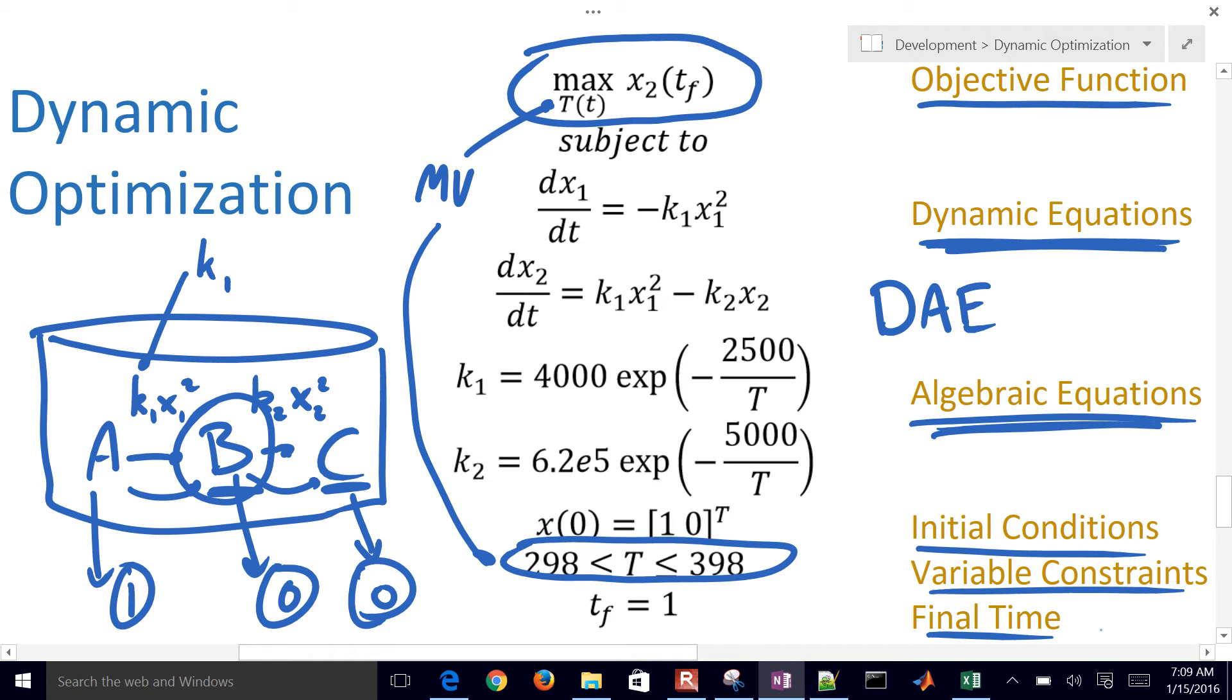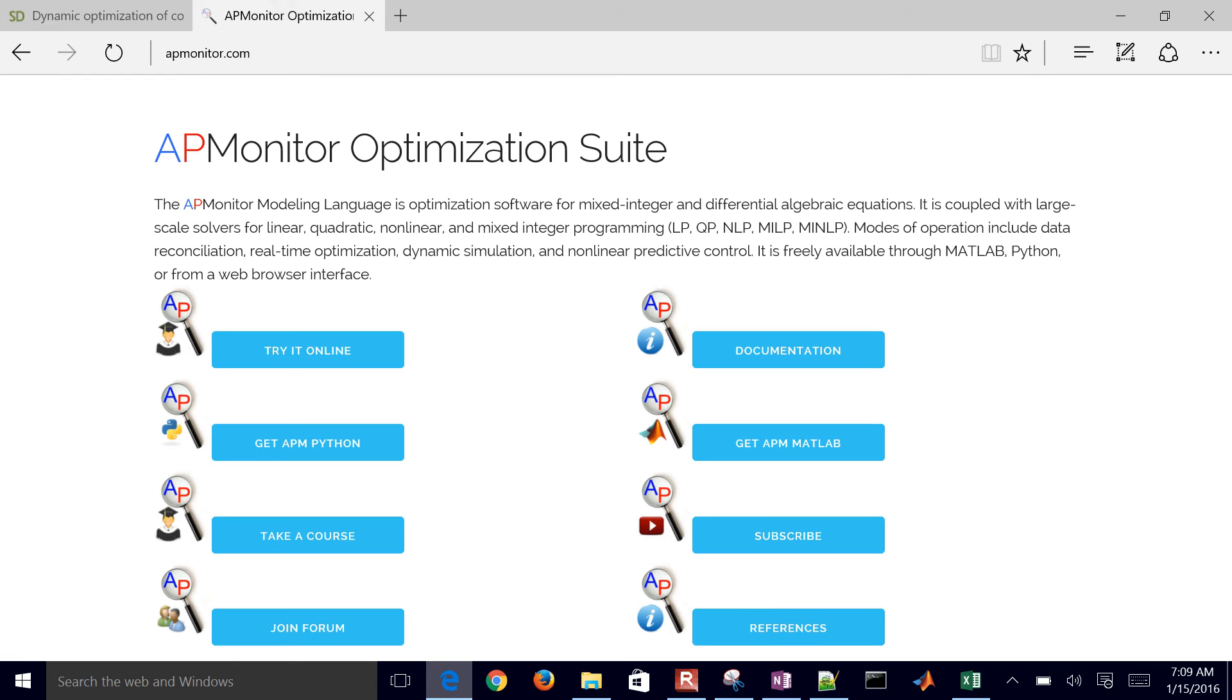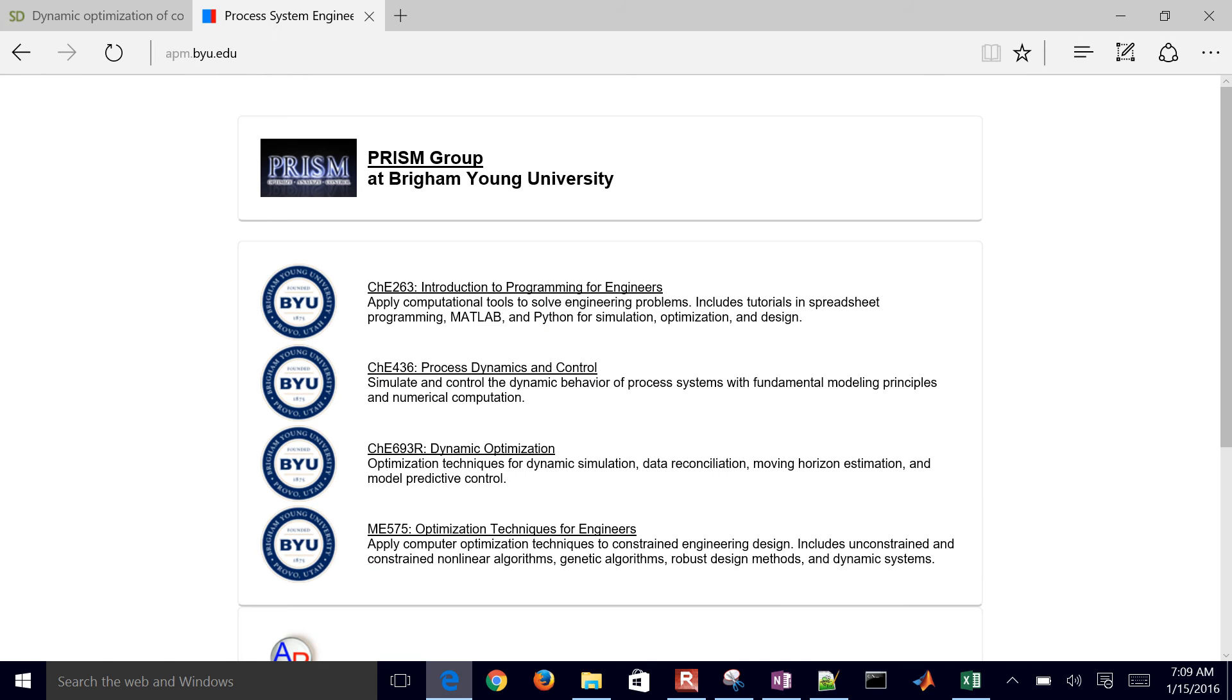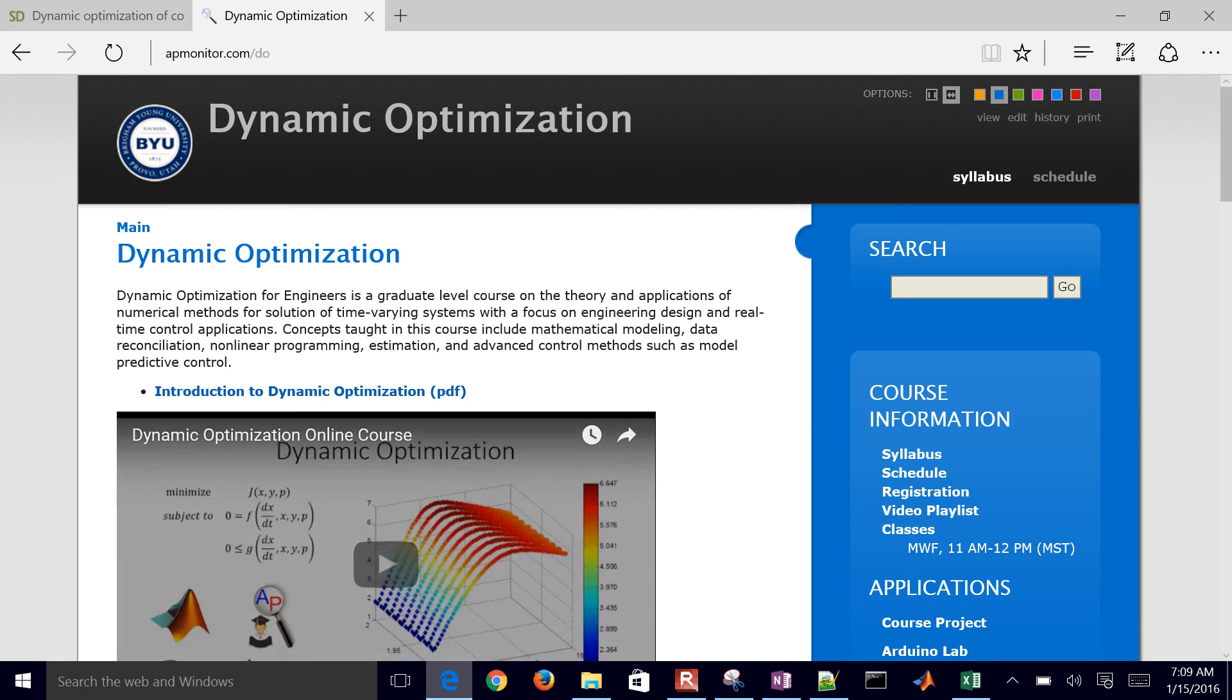So now what I'm going to do is just convert over to the model file and go ahead and create this model file. If you want to follow along, you can type this out, or you can come to the apmonitor.com website, select the Take a Course link, and then select Dynamic Optimization.